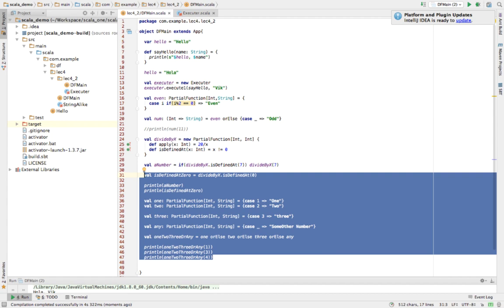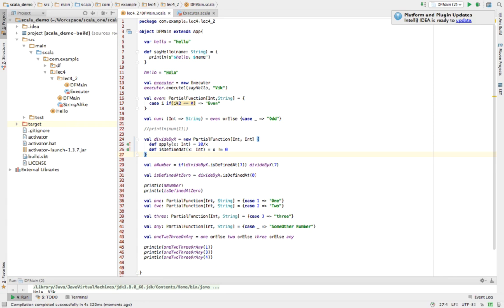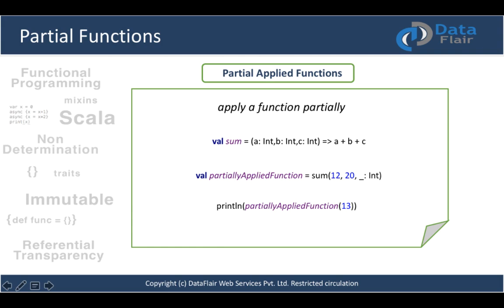Now that we have a basic understanding of function literals, higher-order functions, closures, and partial functions, let's look at partially applied functions. This topic is different from partial functions — it means applying a function partially. For example, a normal function literal 'sum' takes three integer parameters and returns their sum.